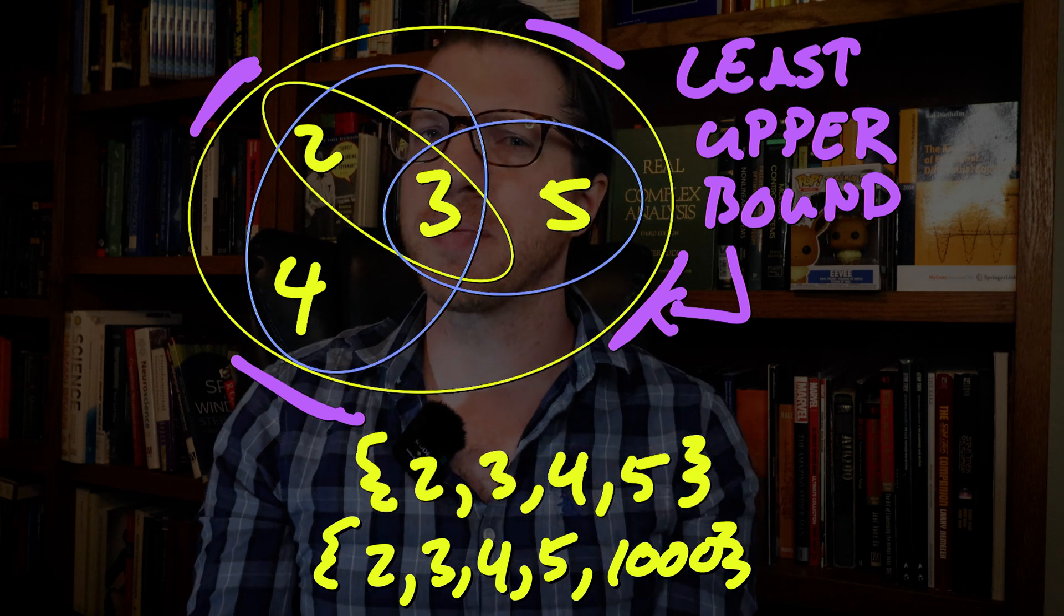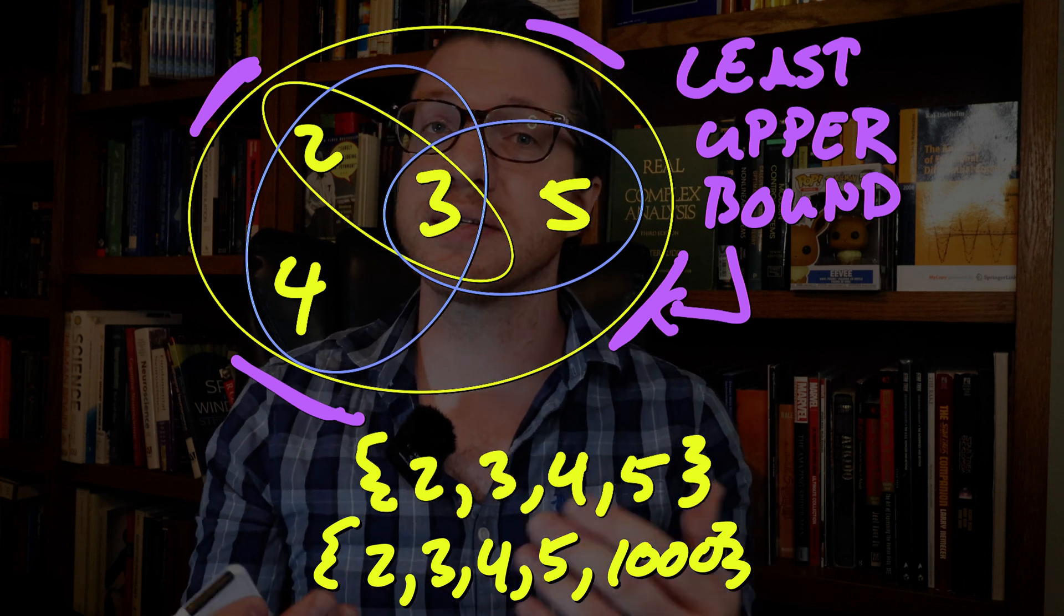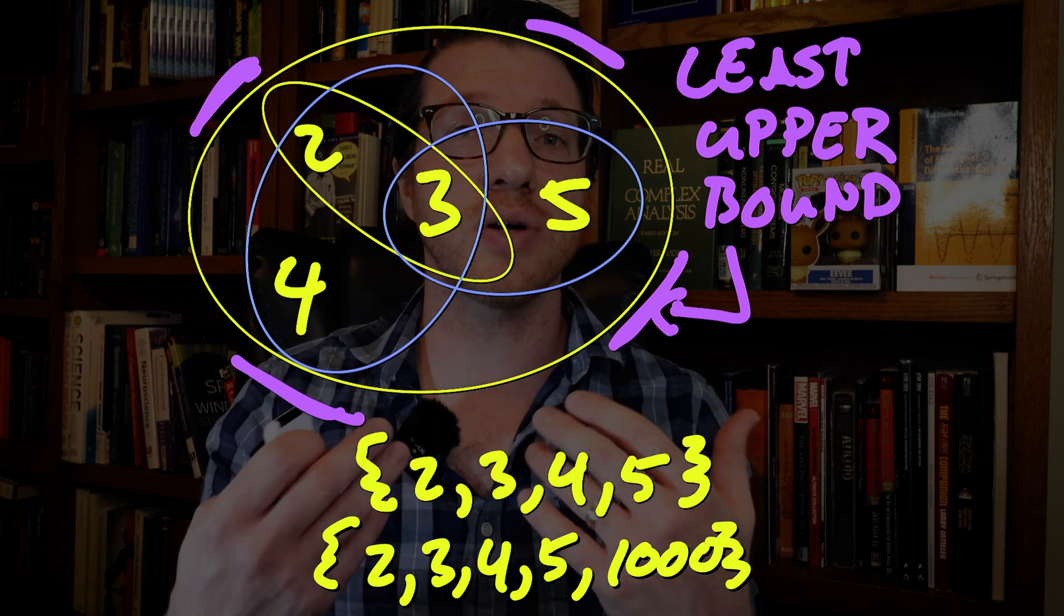then the new subset is indeed larger than each of our original subsets since it contains each one of them. However, it isn't the least upper bound since 2, 3, 4, 5 is a smaller subset that is also an upper bound of our original collection.